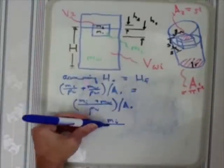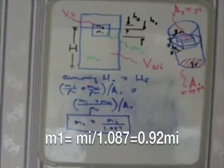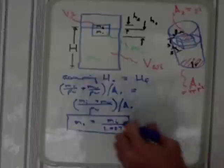So doing the math, we wind up with M1 equals Mi over 1.087. And that is our prediction.